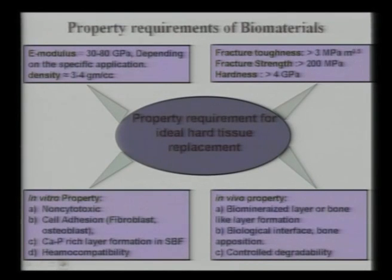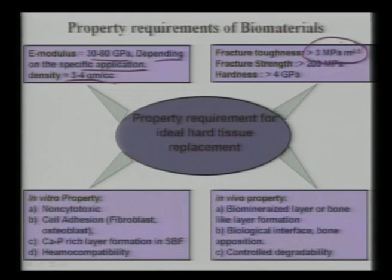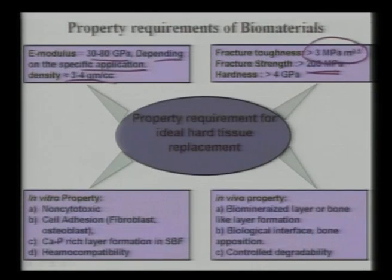A snapshot of property requirements for biomaterials: elastic modulus is around 30 to 80 GPa depending on specific application; density is 3 to 4 g/cc for ceramic-based materials; fracture toughness should be more than 3 MPa√m (cortical bone fracture toughness varies 2 to 12 MPa√m); fracture strength should be as high as possible, such as 200 MPa for load-bearing applications.